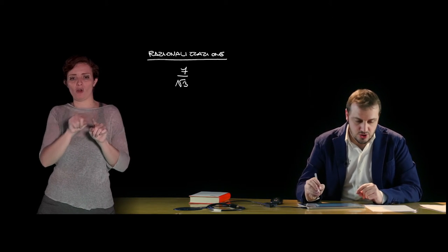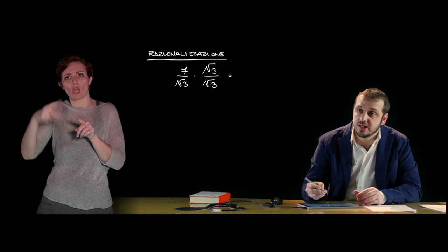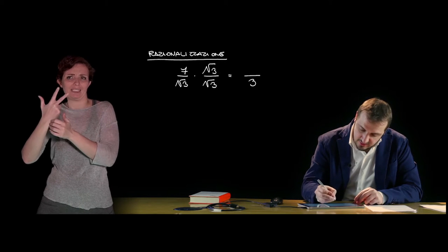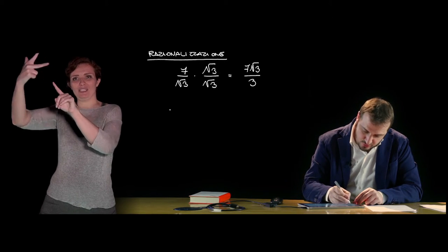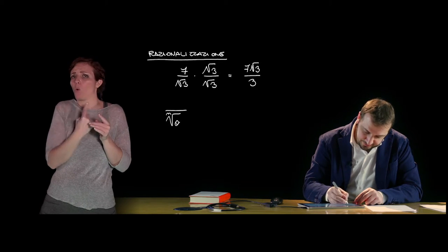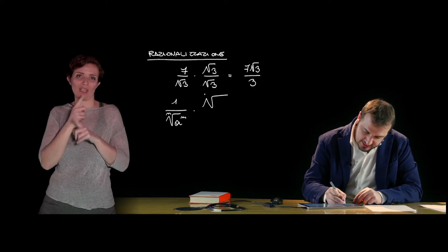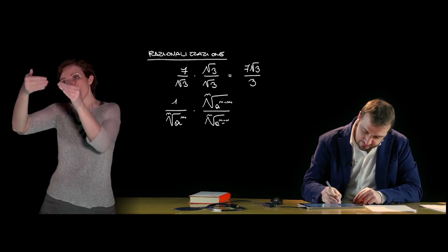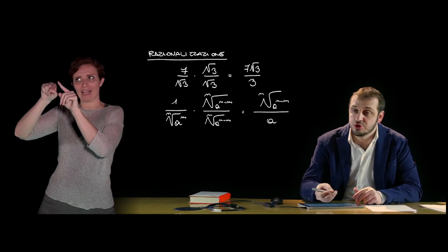There are different cases. The simplest is when the denominator consists of a single radical, for example 7 divided by √3. If the index of the radical is 2, it is sufficient to multiply both numerator and denominator by the radical itself — by √3. At the denominator we get the square root of 3² which gives 3, while at the numerator we get 7√3. In general, for 1 divided by the nth root of a (with a > 0), we multiply numerator and denominator by the nth root of a^(n−m); the numerator becomes the nth root of a^(n−m) and the denominator becomes a.